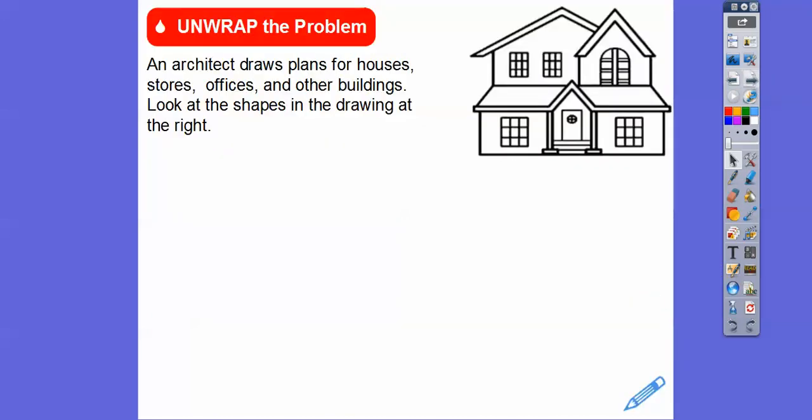For example, architects draw plans for houses, stores, offices, and other buildings. They draw these on paper or sometimes on the computer, but it's in a two-dimensional shape, which is like a plane surface. Look at all these shapes — they're all flat, all drawn on a piece of paper. Imagine this being infinitely skinny.